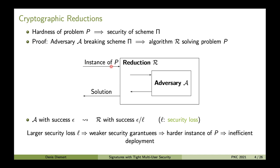In the proof, what we usually do is take an adversary A breaking our scheme π, and construct from this adversary an algorithm R — which we call a reduction — that solves our problem P. The reduction gets an instance of P, simulates the security experiment for the adversary A, and in the end takes the output of A and tries to extract the solution to the problem from that output. If we have an adversary A with success ε, then we get a reduction R with success ε divided by L, where L is called the security loss. Keep the security loss in mind — this will become important later.